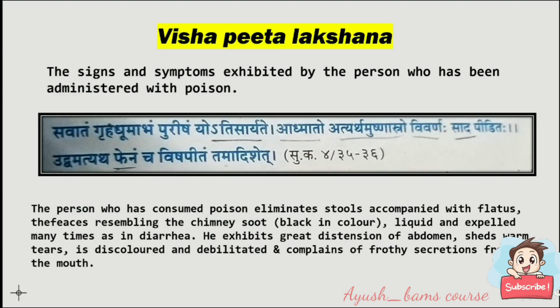Vishapita lakshana — the signs and symptoms exhibited by the person who has been administered with poison: the person who has consumed poison eliminates stools accompanied with flatus resembling chimney soot, liquid and expelled many times as in diarrhea. They exhibit great distension of the abdomen, shed warm tears, appear discolored, and complain of frothy secretions from the mouth.